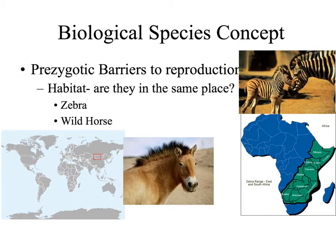Another example are true wild horses, which are found in one region of Mongolia, and zebras, which are found in Africa. These animals are in different places, which means they will never meet and their populations will never be able to reproduce.